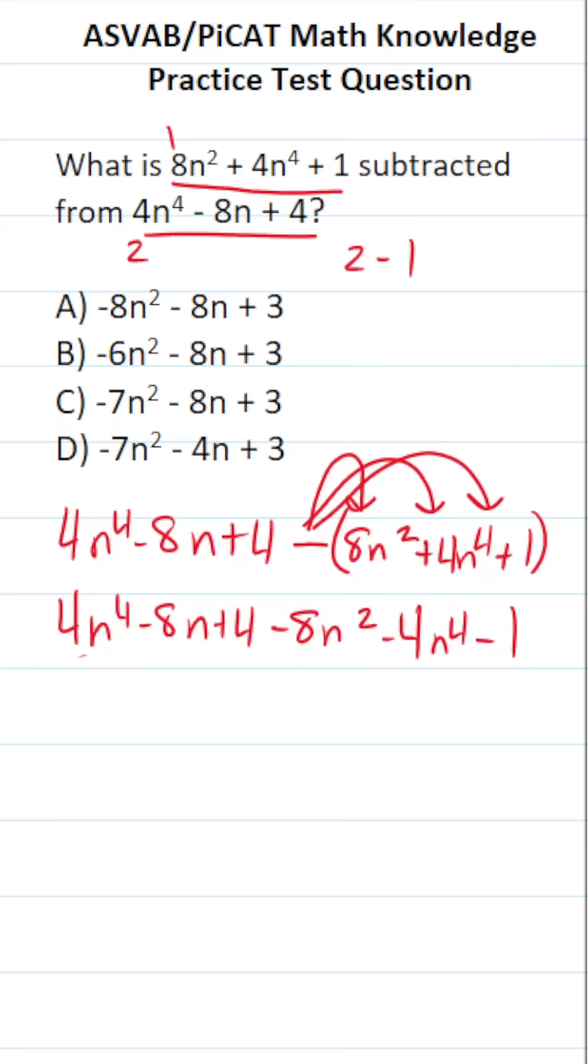Now that we've distributed that negative sign, all we have to do is go through this expression and combine our like terms. Starting with 4n to the fourth, you can see that its corresponding like term is right here, negative 4n to the fourth. 4n to the fourth minus 4n to the fourth, those just cancel each other out. So it's just zero, and we don't have to write zero.